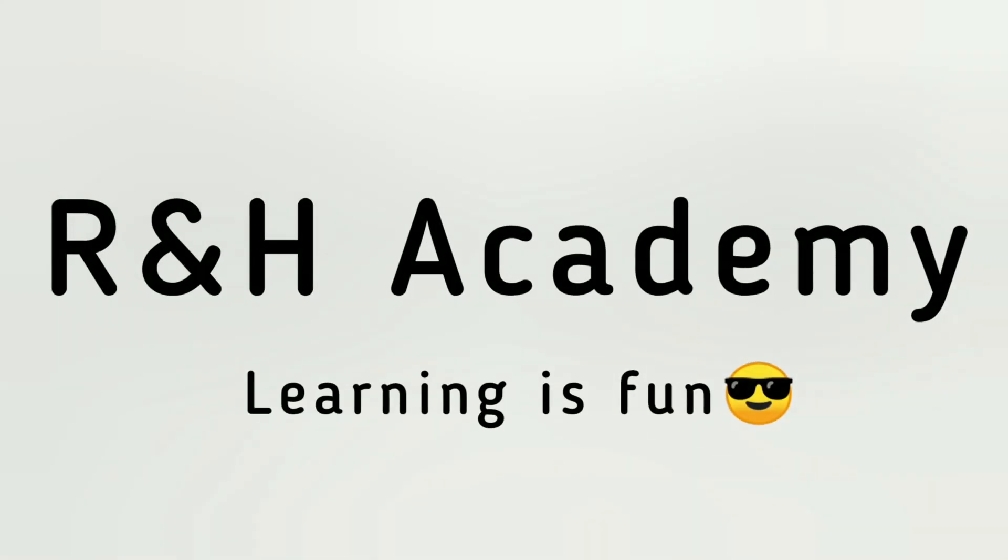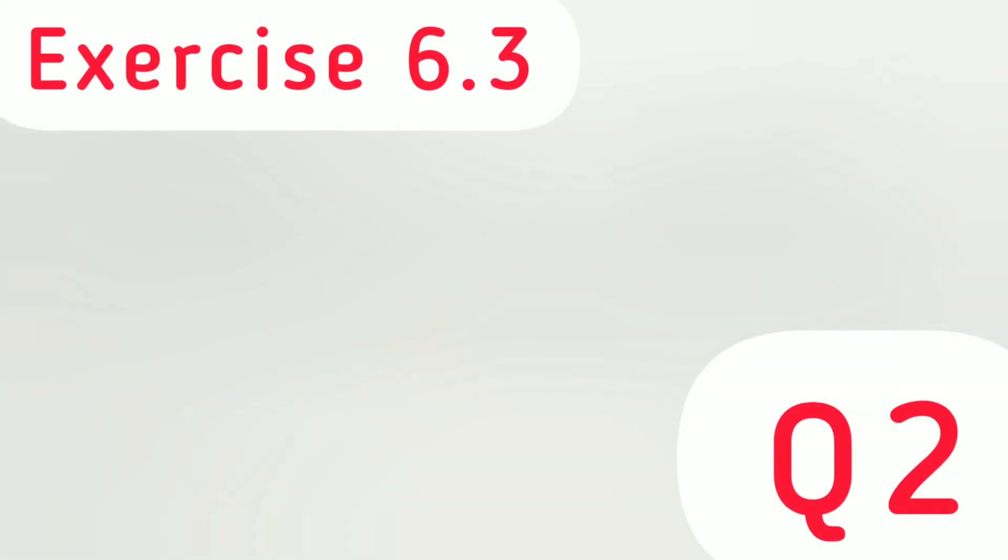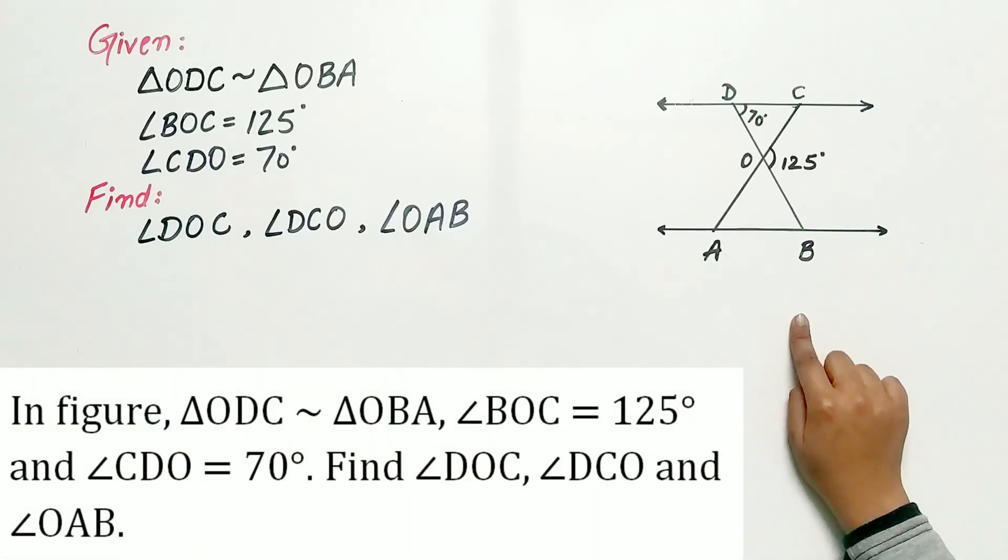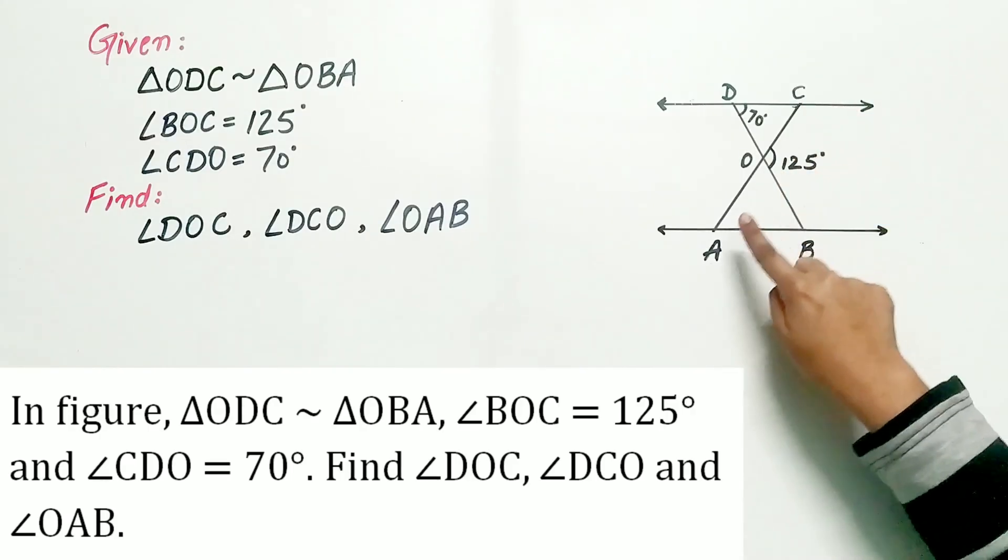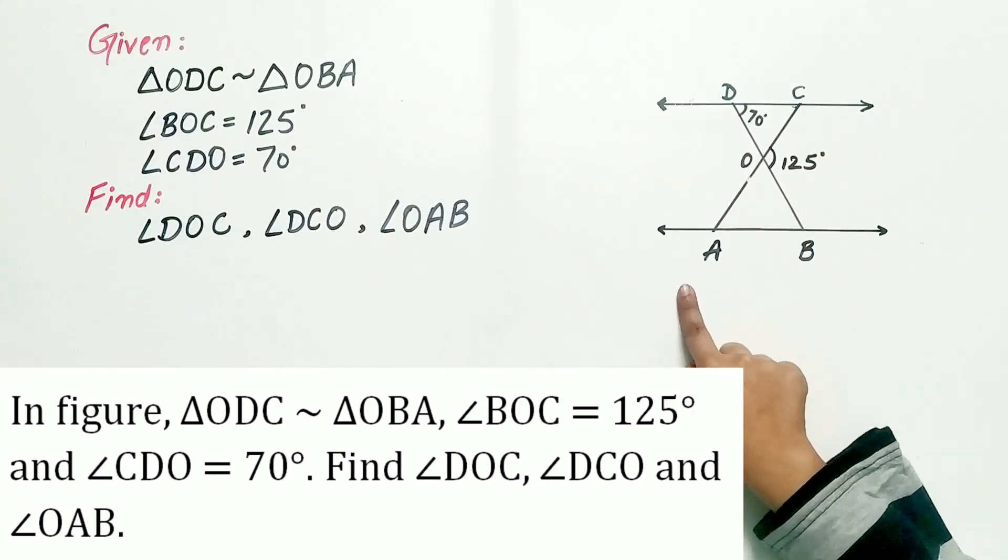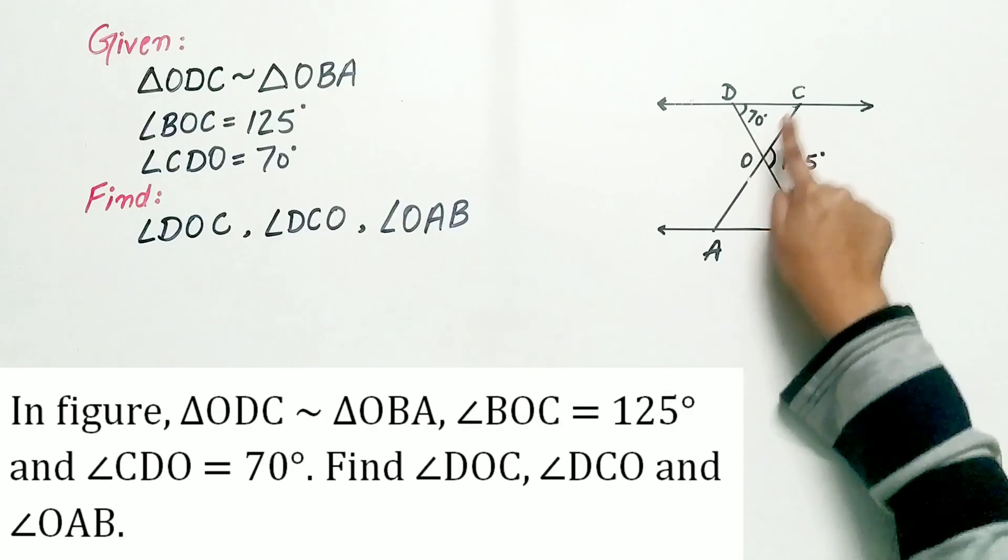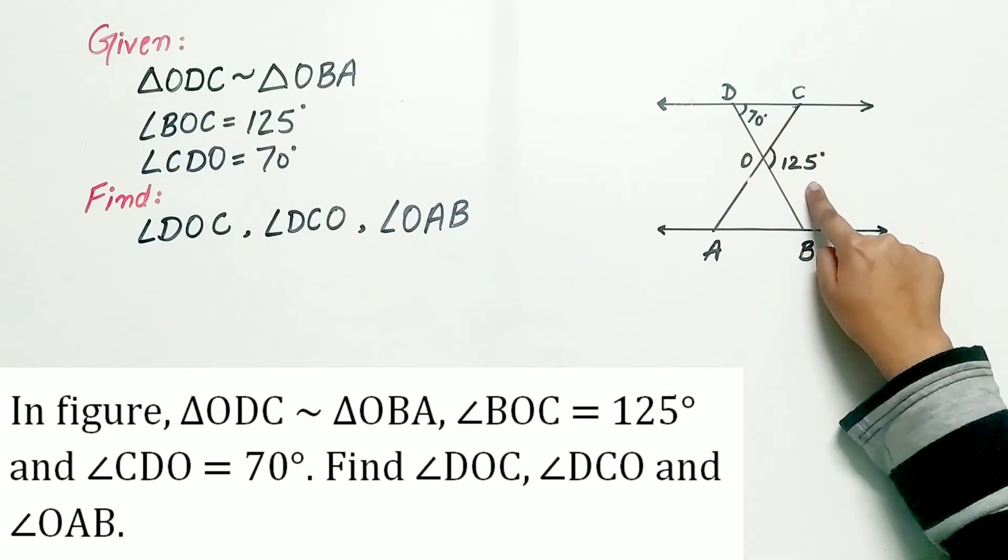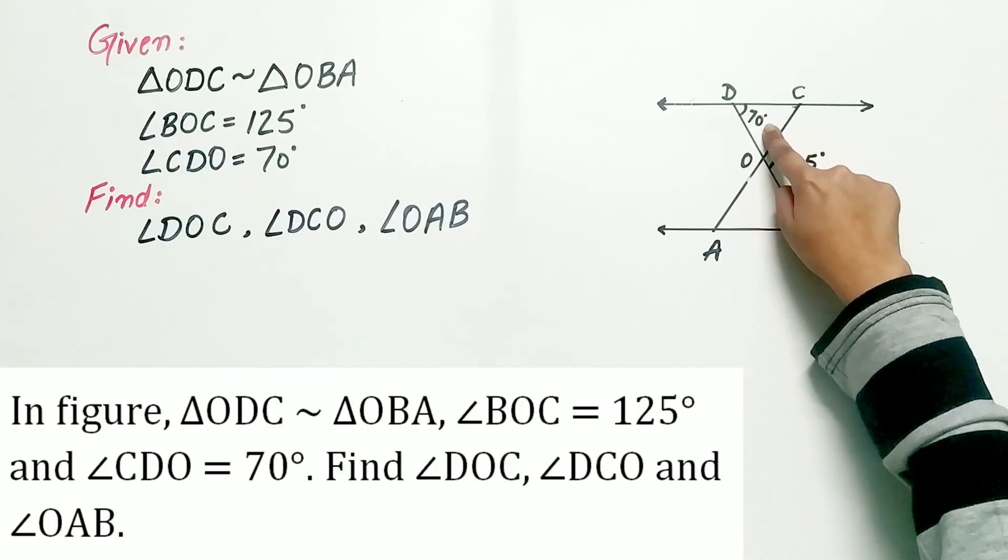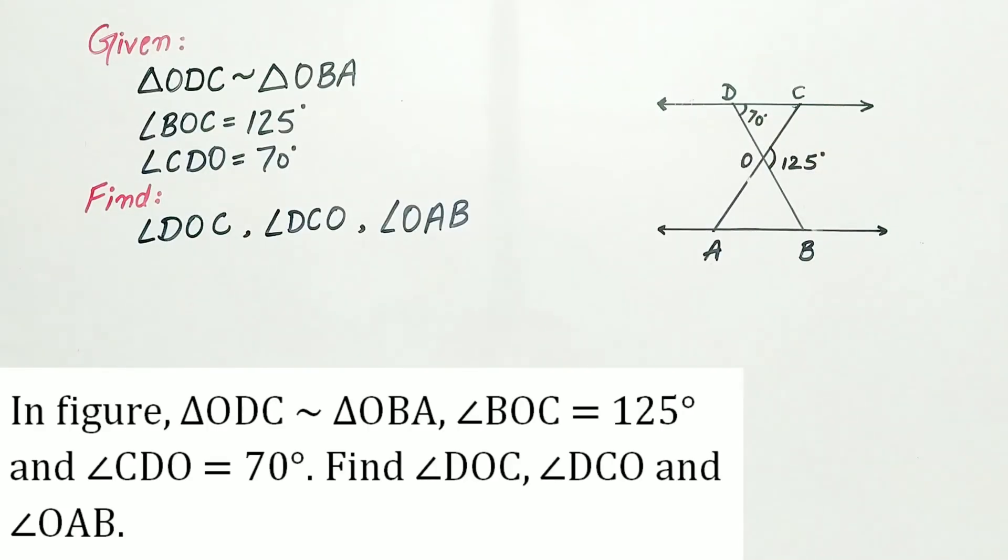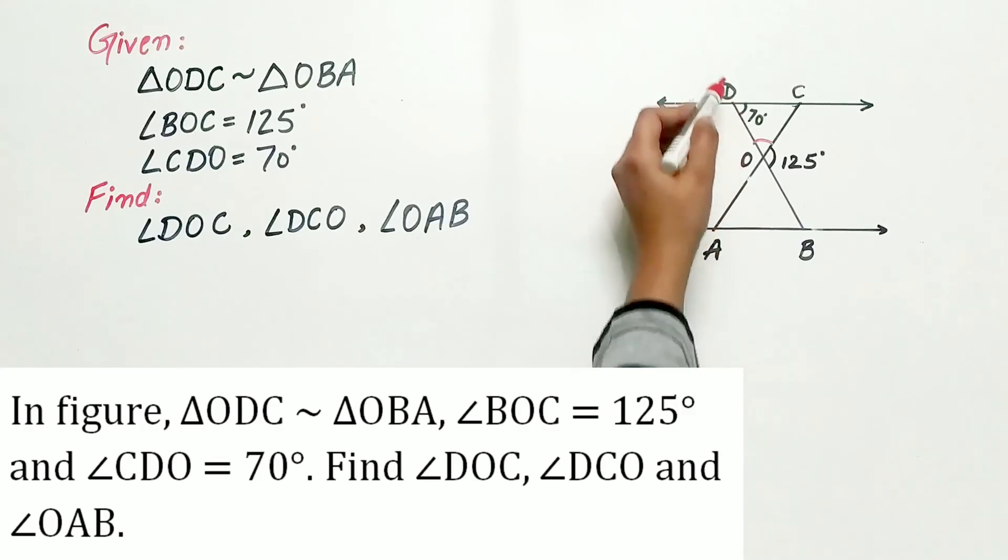Welcome to RNH Academy channel. Question 2 of exercise 6.3 says, in figure triangle ODC is similar to triangle OBA, angle BOC is 125 degree, angle CDO is 70 degree. Find angle DOC, angle DCO, and angle OAB.